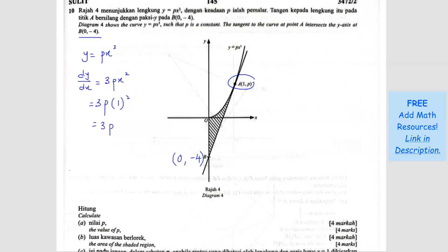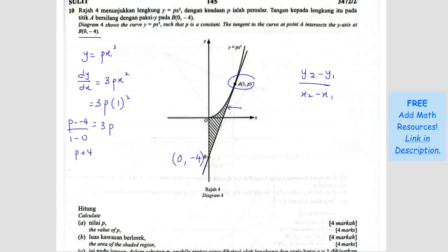So this 3p is the gradient at that point, and it should be the same as the gradient of the tangent. We can also find the gradient using (y2 minus y1) over (x2 minus x1) with the two points on the tangent. So: (p minus negative 4) over (1 minus 0) equals p plus 4, and this equals 3p. So 4 equals 2p, giving p equals 2.